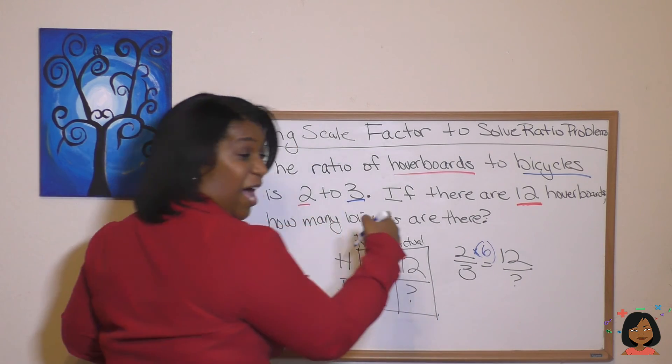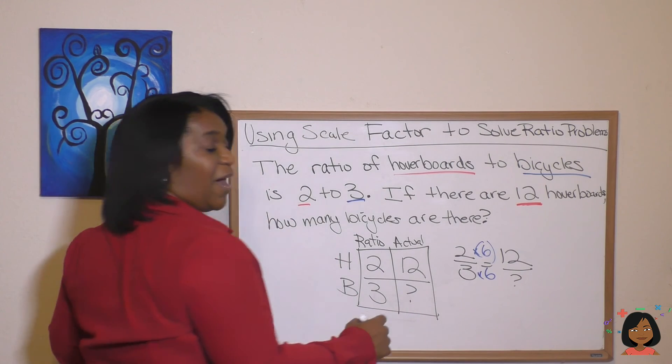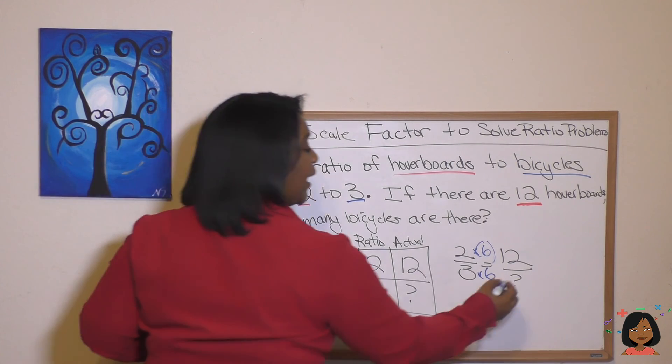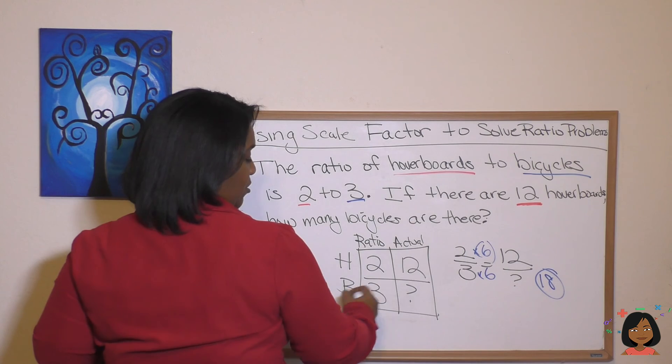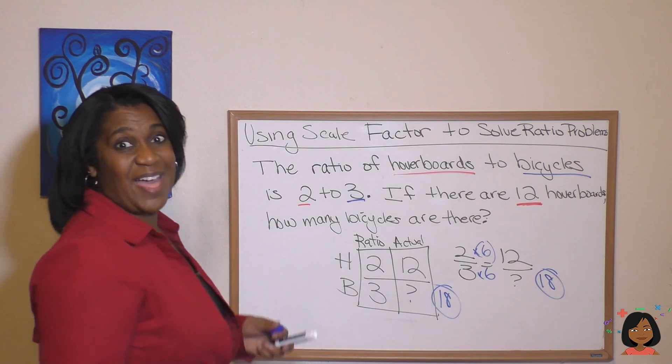Two times six is 12. And what you do to the top, you've got to do to the bottom. So we're going to do three times six on the bottom. Three times six is going to be 18, which means that our answer for bicycles is 18. And that's it.